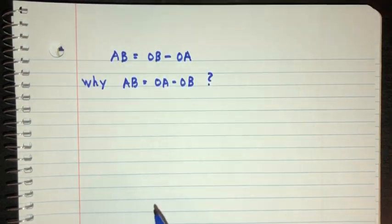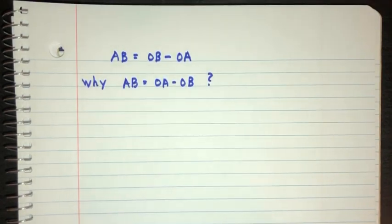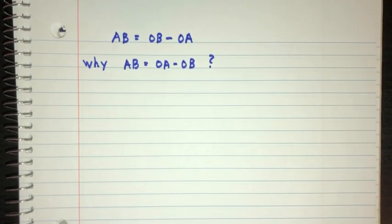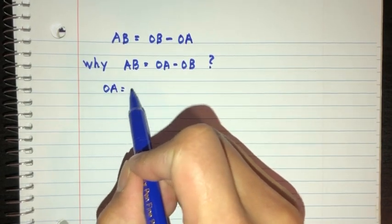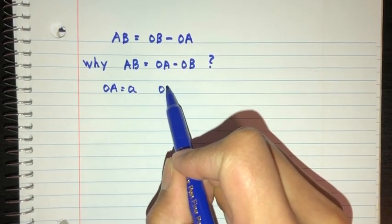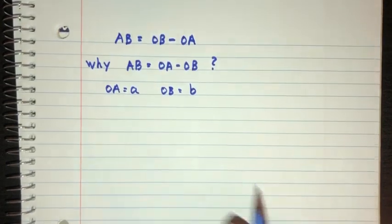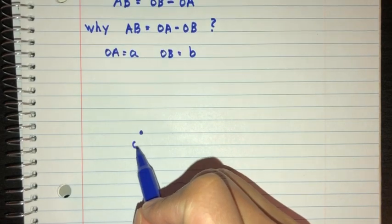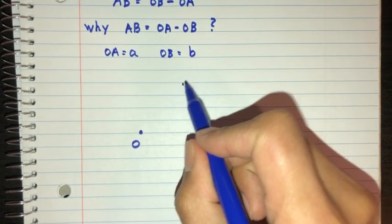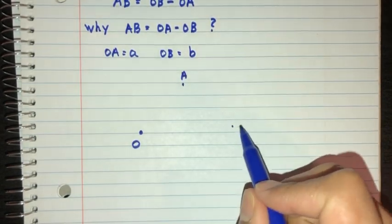Why is this the case? To understand this, we have to draw a diagram to understand what's happening. For example, let OA equal to A and OB equal to B. So we have a point O here to begin, and we have a point A here, and we have a point B.